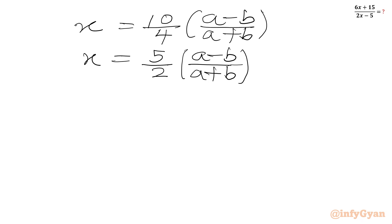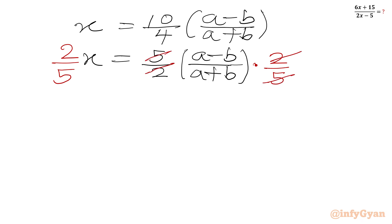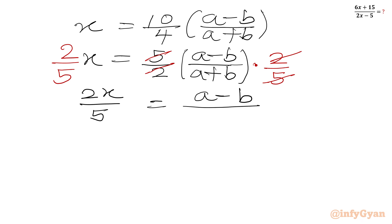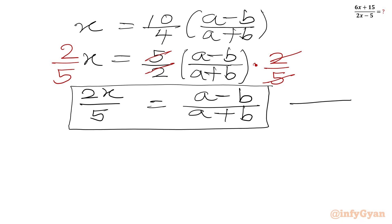The left-hand side is x. Now we will multiply both sides by 2/5 so that 5/2 from the right-hand side will be cancelled out. So this 5 and 5 cancel, and 2 and 2 cancel. Now we can write our equation: 2x/5 = (a - b)/(a + b). Let's call this equation 1.